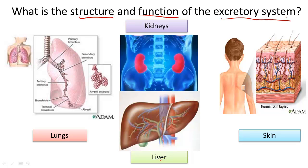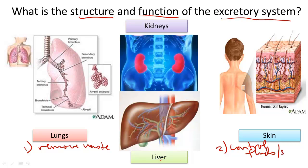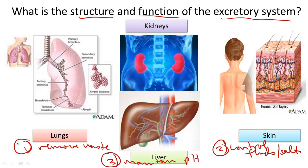There are three major functions of the excretory system. One is to remove waste from the body. Two is to control and regulate fluid balance — fluids and salt in the body. And three is to maintain the pH of the body, or the acidity of the blood. These three processes are all vital to maintaining homeostasis, or balance, in the body.